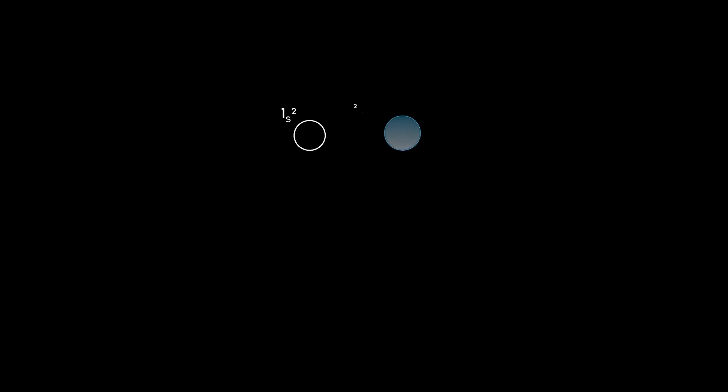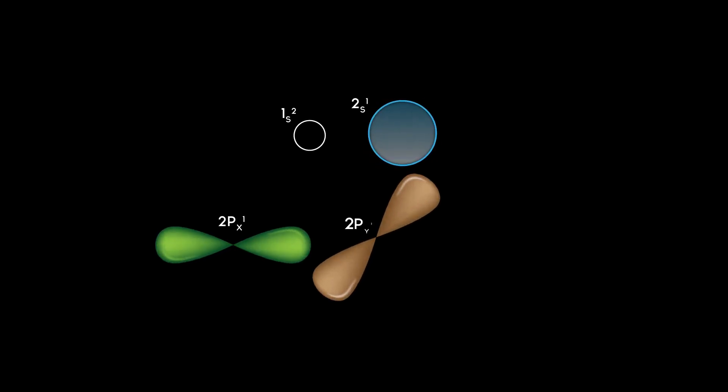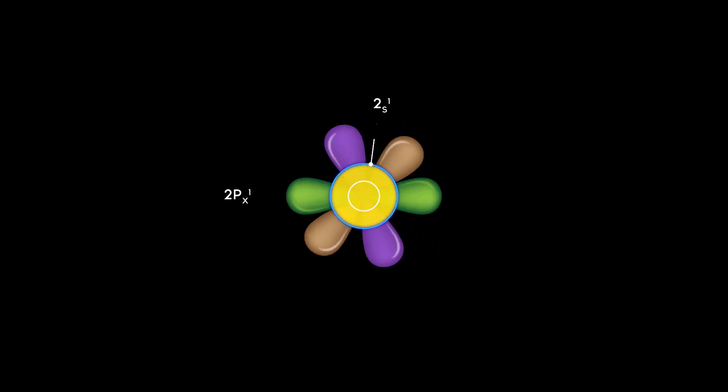Besides sp3 and sp2 hybridization, carbon atoms also undergo sp hybridization. In sp hybridization, the 2s and 2px orbitals are involved.